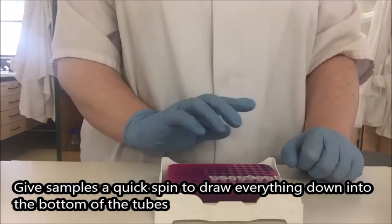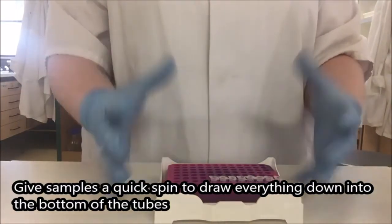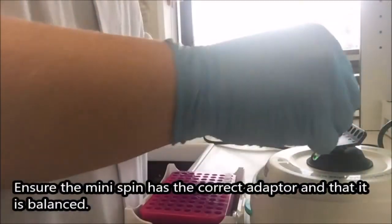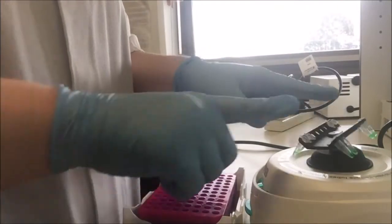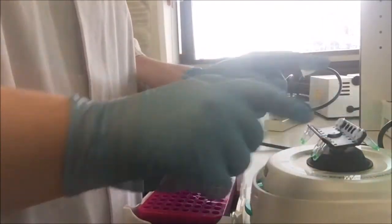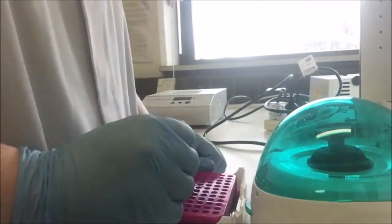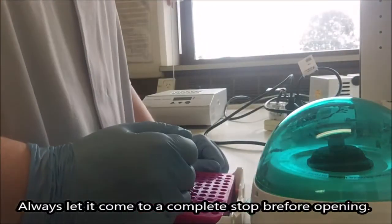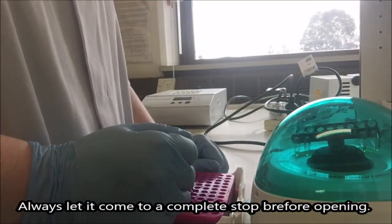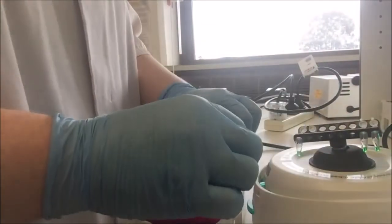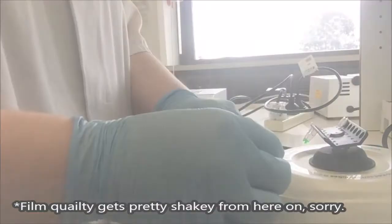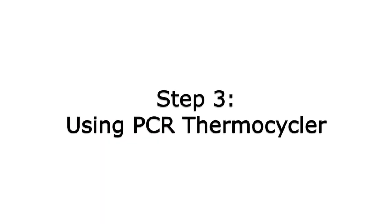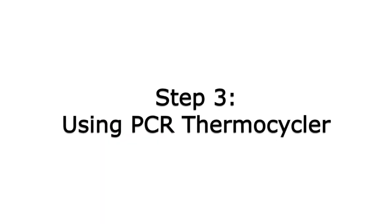So I'm going to put these in the mini spin that we've seen earlier to draw everything in the tube down into the bottom. I'm going to make sure that this is balanced. I've got two sides and I've got two tubes at each corner. So lid on. I'm going to make sure that I am careful taking these out. I don't want to bump them and have to re-spin them.